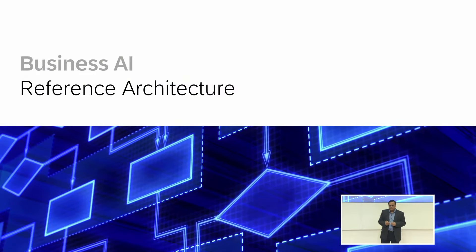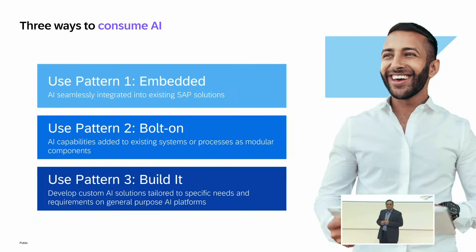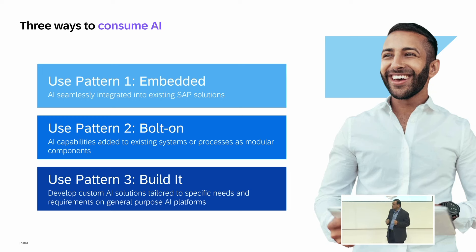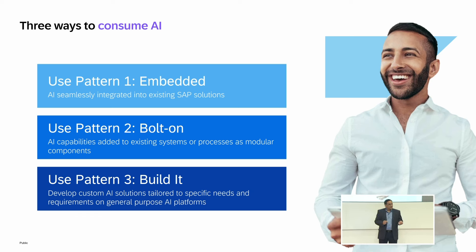Let's jump directly into the reference architecture for business AI. There are three ways in which we can consume AI, and I'm consciously starting from the consumption side, because I'm at least fed up of using ChatGPT and figuring out how the hell I use that in my enterprise. We need to make it consumption-ready — that's the time right now. So there are three ways in which we can consume AI. We can make our applications intelligent — that's called embedded AI. There may be a few applications already doing that today with the traditional AI aspect.